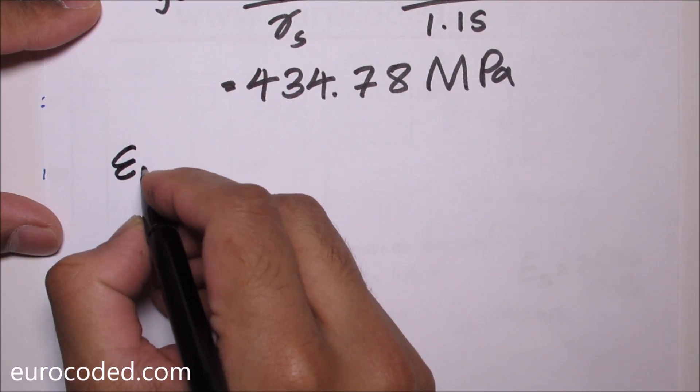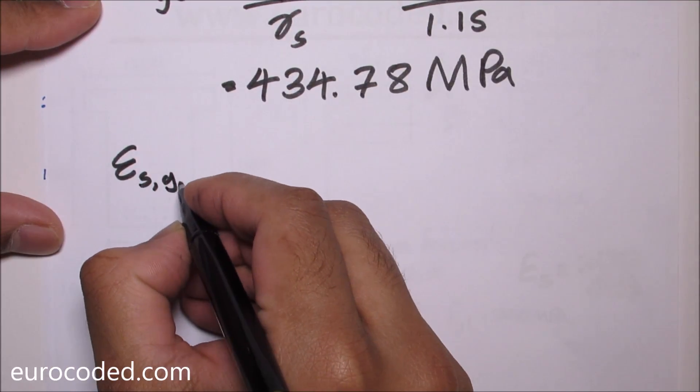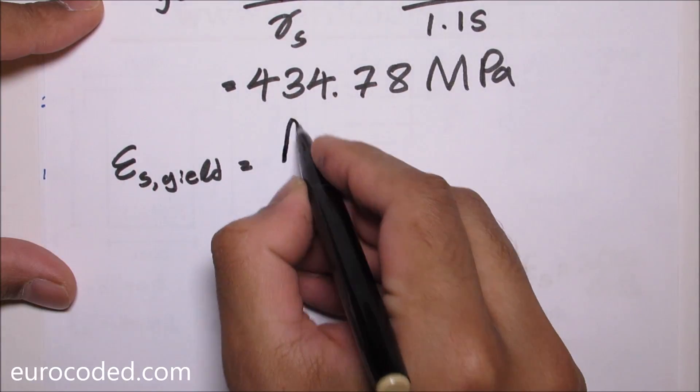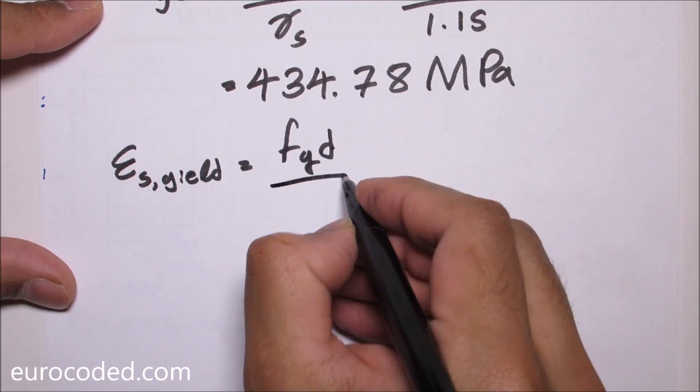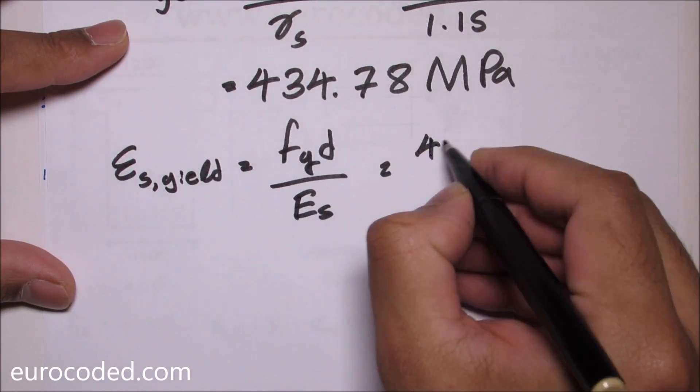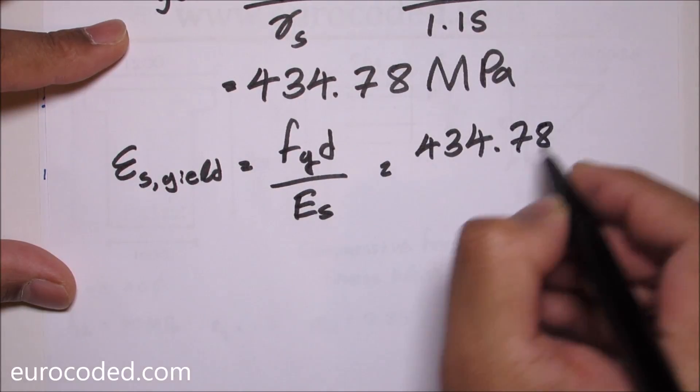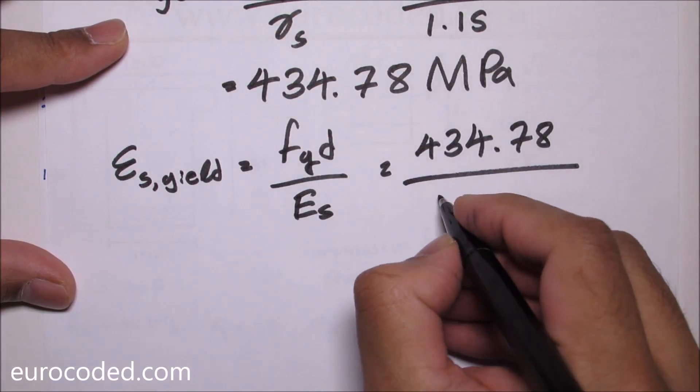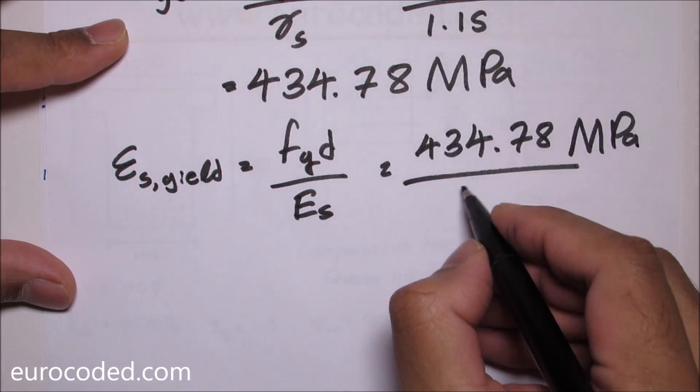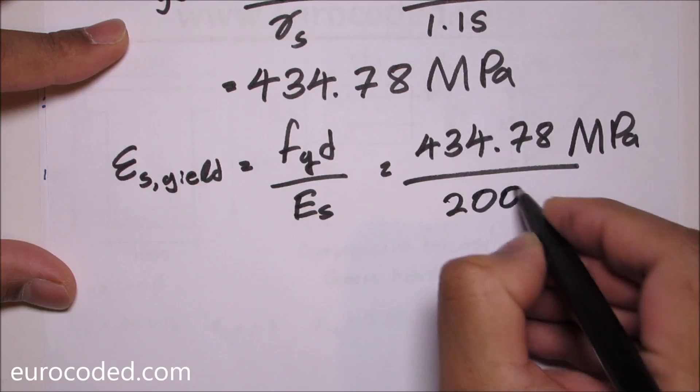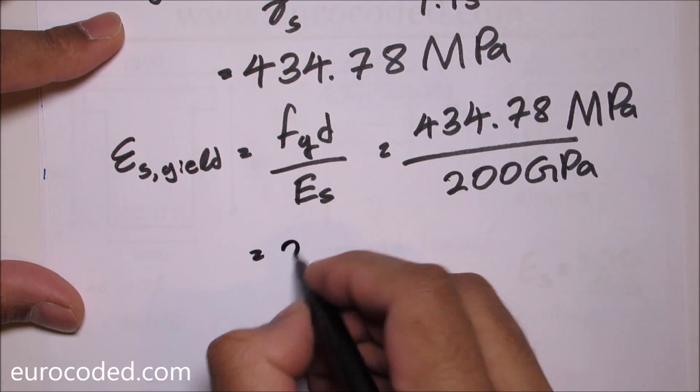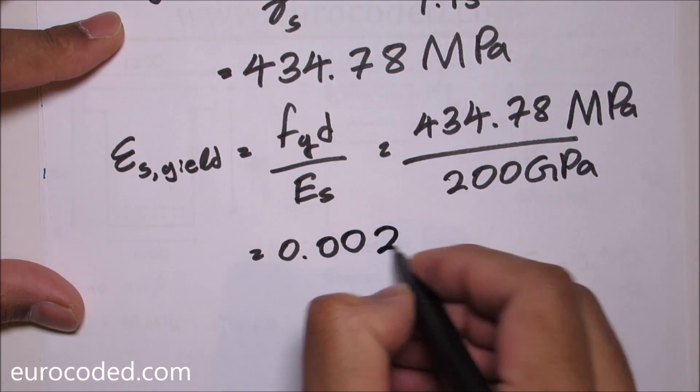This strain of reinforcement, epsilon yield, is equal to FYD over ES which is 434.78, this is in megapascal, over 200 gigapascal. This is going to be 0.00217.